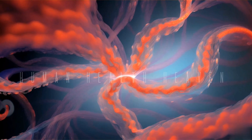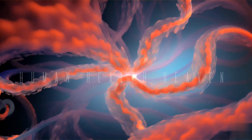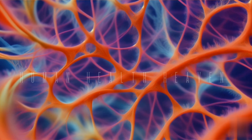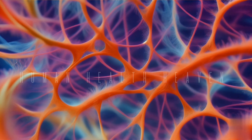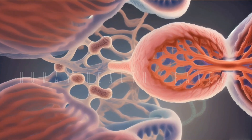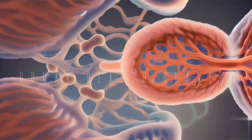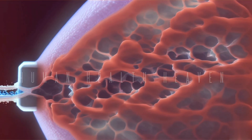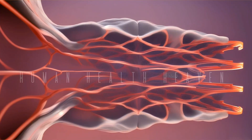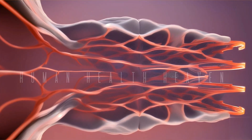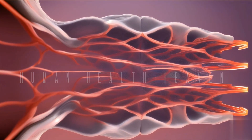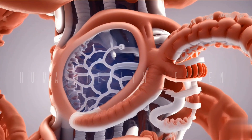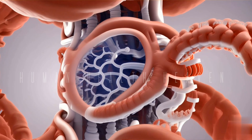This large surface area enhances the lungs' ability to extract oxygen and eliminate carbon dioxide. Thin walls: the walls of alveoli are extremely thin, allowing for rapid diffusion of gases. This thinness ensures that oxygen can easily pass from the air sacs into the bloodstream, and carbon dioxide can move from the blood into the alveoli for exhalation. Surfactant production: alveoli are lined with a fluid called surfactant, which reduces surface tension and prevents the alveoli from collapsing. This surfactant is crucial for maintaining the stability of the alveoli and preventing respiratory distress.